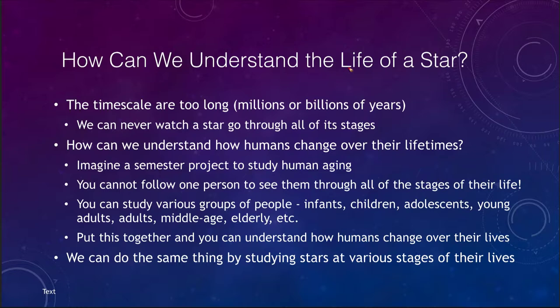First, how can we possibly understand the life of a star? The timescales are minimally millions of years, and more likely for stars like the sun, billions of years. This means we can never watch a star go through all its stages of life. Even over multiple human lifetimes, stars are unlikely to change at all.